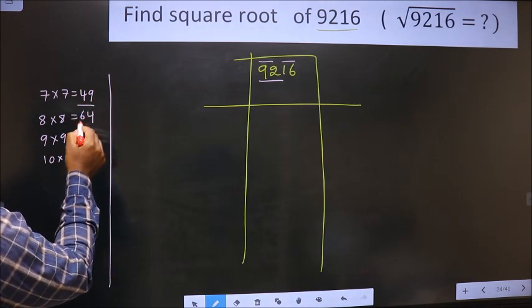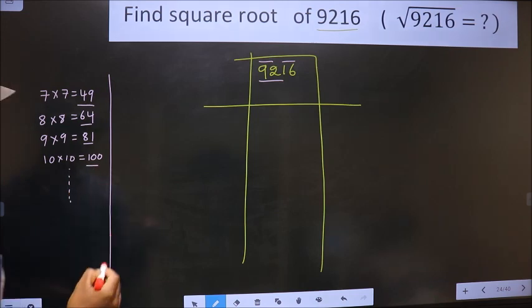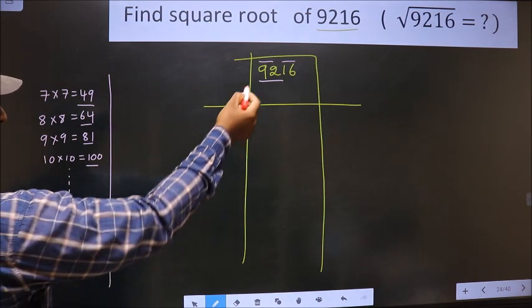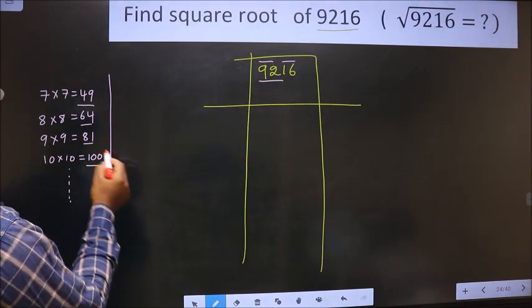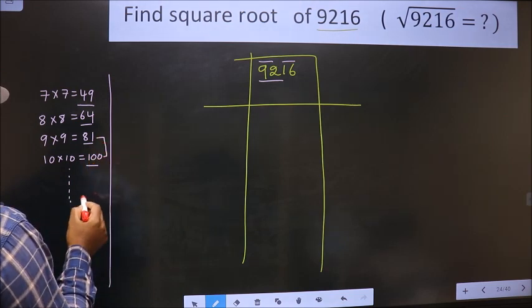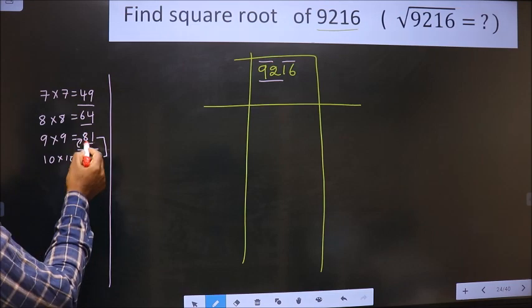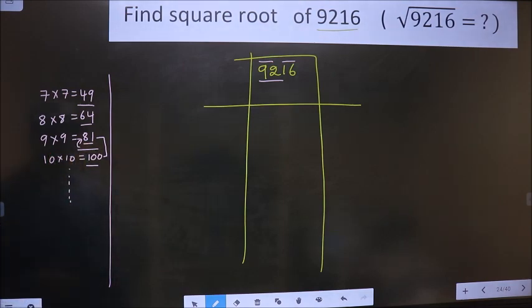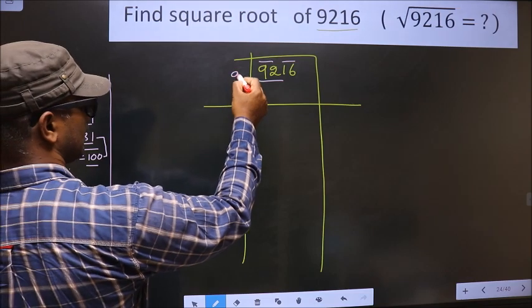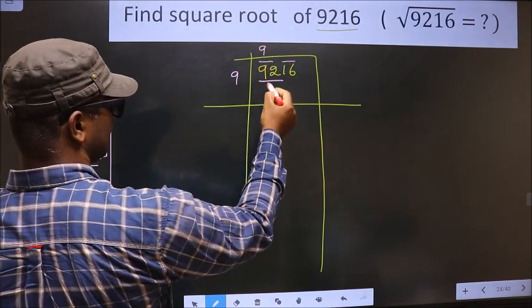Here we have 92. It lies between these two numbers, so we take the smaller one, that is 81. 81 is 9 times 9. So that is 9 times 9, 81.